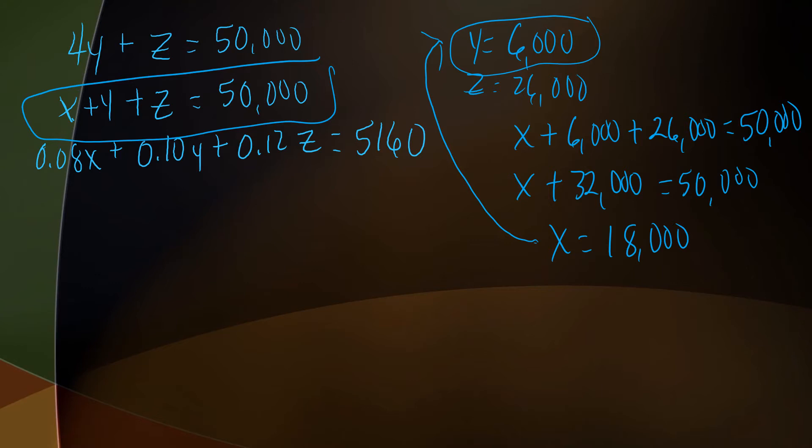Now, let's find out if we've done this correctly, and I can do that by substituting in 18,000 for X here, 6,000 for Y here, 26,000 for Z there, and if that all comes up to 5,160, then shazam, we're there. So I've got 0.08 times 18,000 plus 0.10 times 6,000, that's my substitution for Y, plus 0.12 times 26,000, that's what we said Z was, and our total income was 5,160. All right, let's see. I need my calculator.